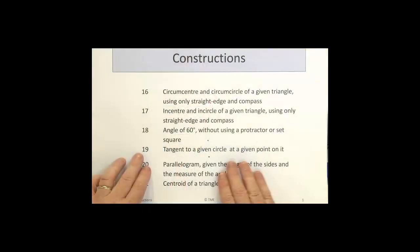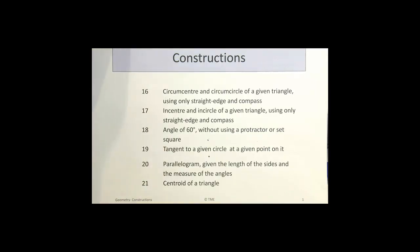We turn now to construction 19, a tangent to a given circle at a given point on it.